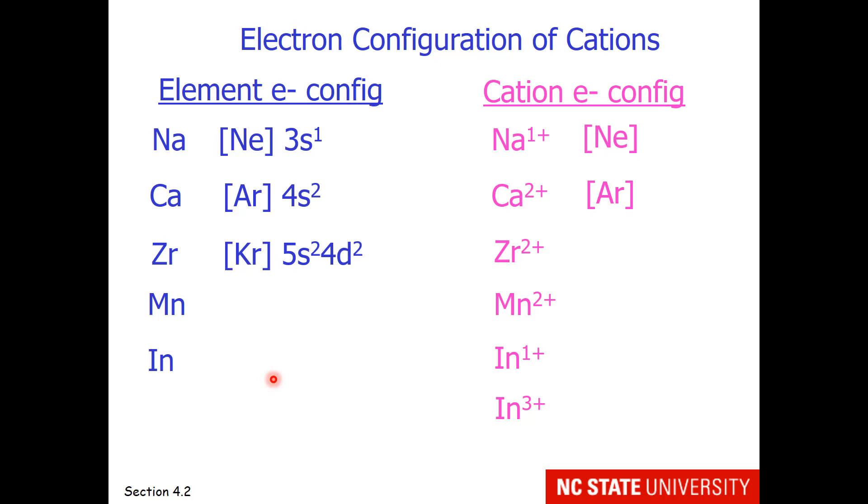Neutral zirconium has electron configuration krypton, 5s2, 4d2. So if we want to remove just two electrons to have a 2 plus charge, which one shall we remove first? The 5s or the 4d?